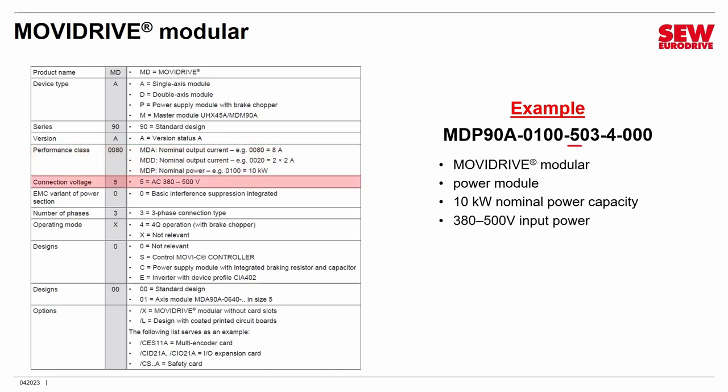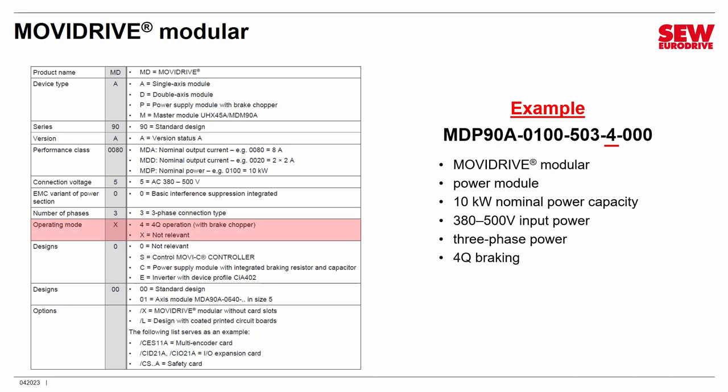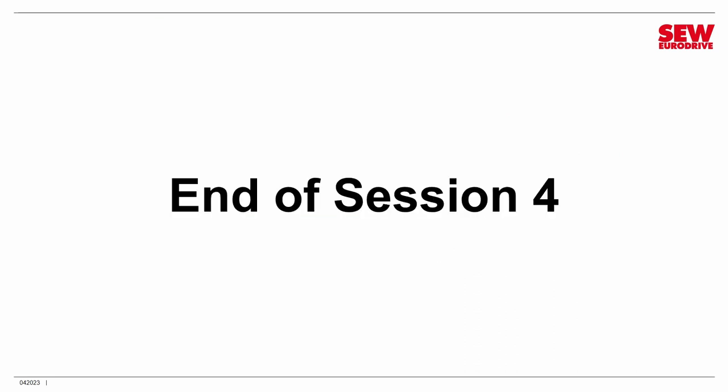The 5 indicates operation on 380 to 500 volts — so probably 460 to 480. Note that we do not make a lower-voltage power supply module at this time; support for 230 to 240 volts is only for MoviDrive Technology and MoviDrive System. These only come in three-phase form. The 4 means you can connect this to a brake resistor — this is where regenerative energy gets handled for MoviDrive Modular; all axis modules feed their regenerative energy back to the power supply, and the brake resistor turns it into heat.